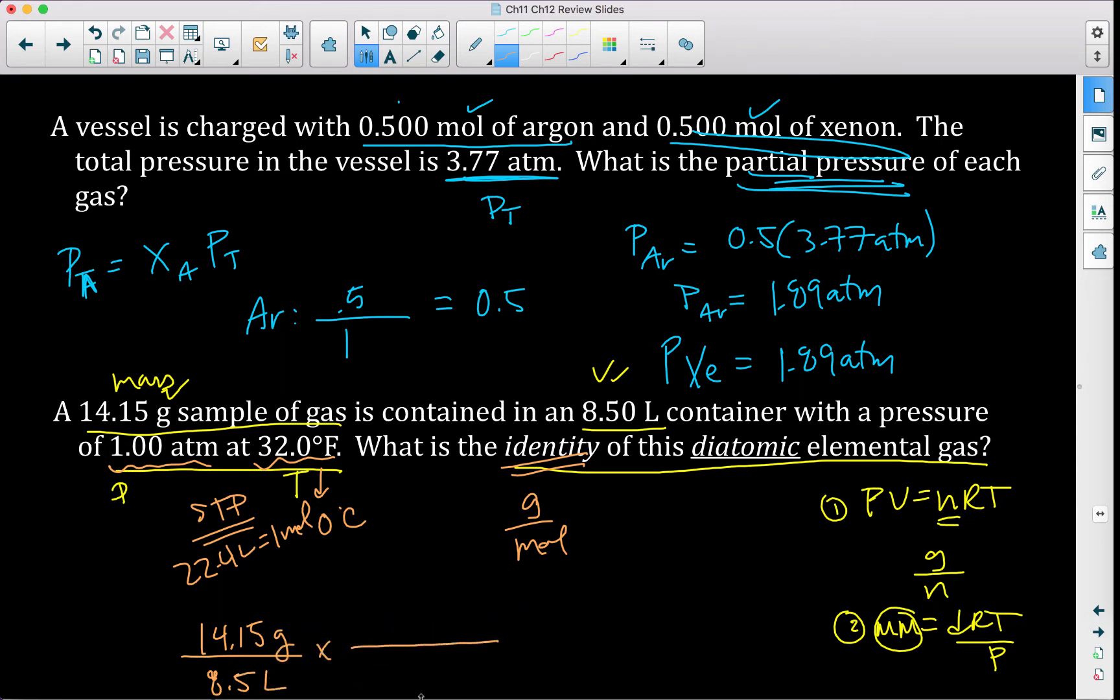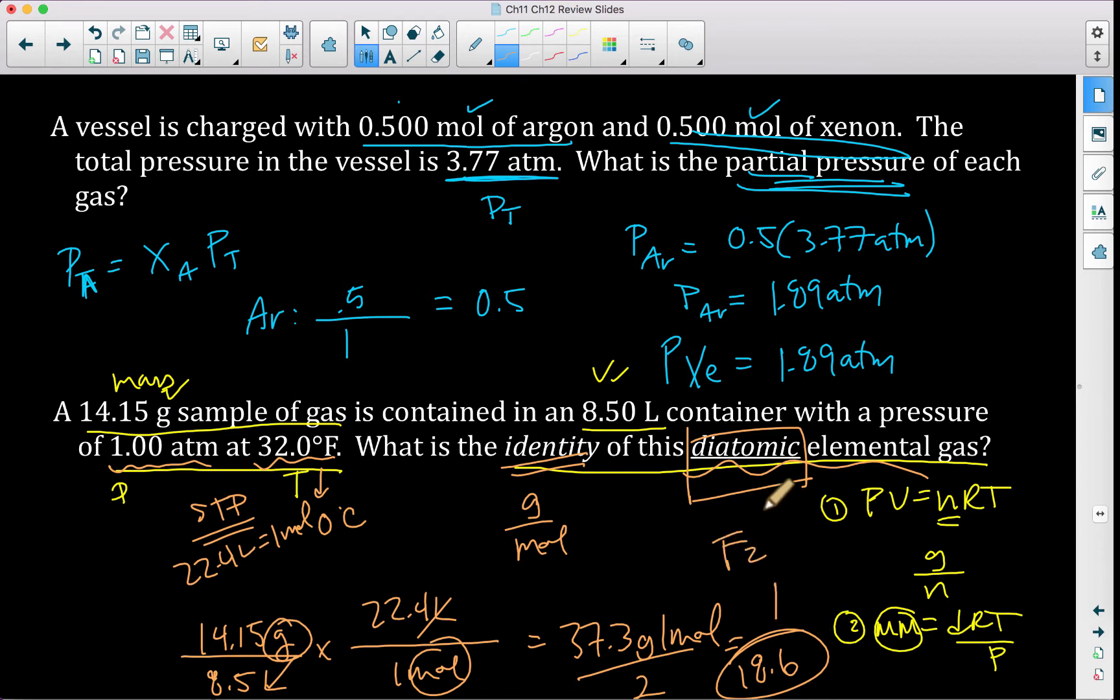So this problem actually gets even easier. If I want to solve for molar mass, which is grams per mole, I currently have 14.15 grams for every 8.5 liters. Now what can I do? 22.4 liters over one mole, liters cancel, I have grams per mole. Which then gives me, if we do that math, 37.3 grams per mole. Now, what can I do to make this last step easier? I know that it's a diatomic elemental gas, which means that if I divide this by two, I'm going to get 18.6 grams per mole. And then we'd go look at a periodic table and see what does this match, knowing that it has to fall under our diatomic elemental gases, which means things like hydrogen, nitrogen, oxygen, and all of my halogens. This turns out to be F1, but the actual gas is going to be F2.